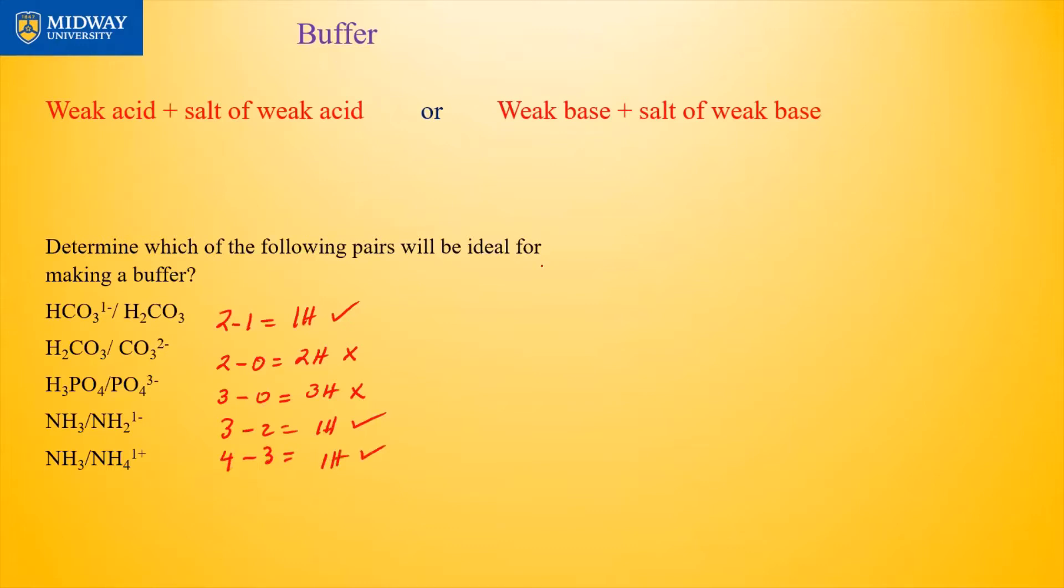Now typically, if you use a weak acid and its salt, then you make an acid buffer. And if you use a weak base and its salt, then you make a basic buffer. But some acids have more than one salt, so you need to make sure that that salt and its parent acid would lead to a difference of one hydrogen for it to be a buffer. Now titration involves the idea of buffer.